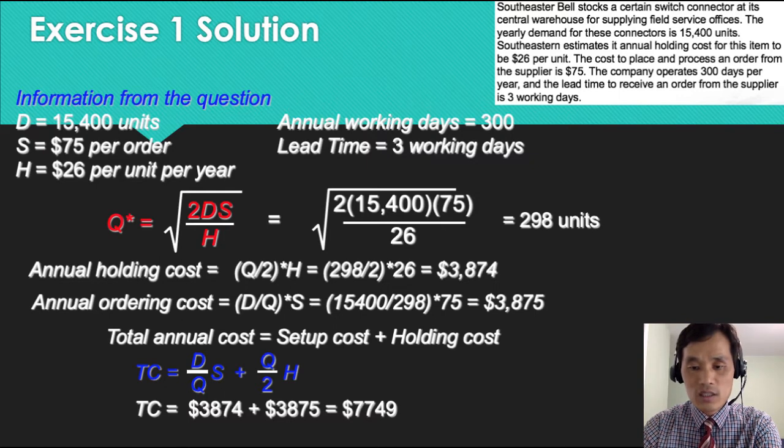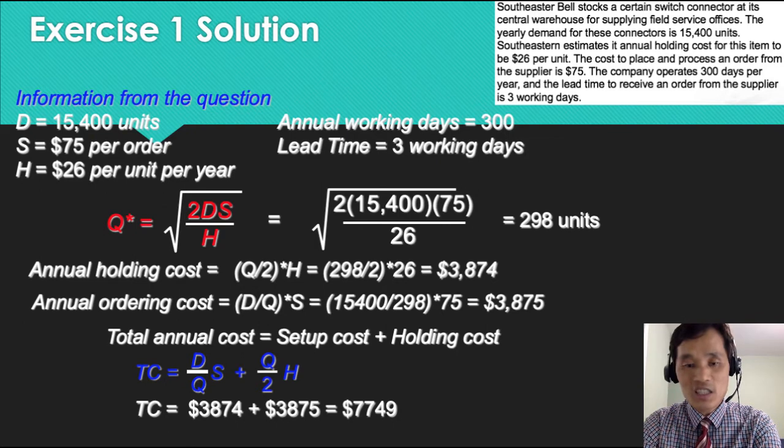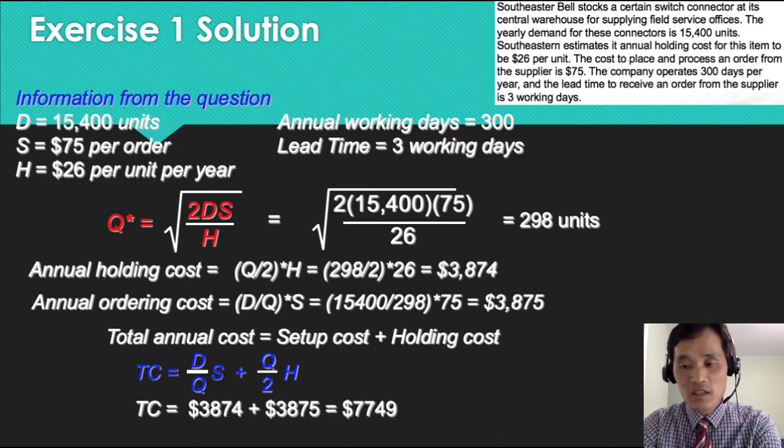Lastly, the reorder point is daily demand times lead time. So daily demand is annual demand divided by the number of working days. Therefore, reorder point is 154 units.